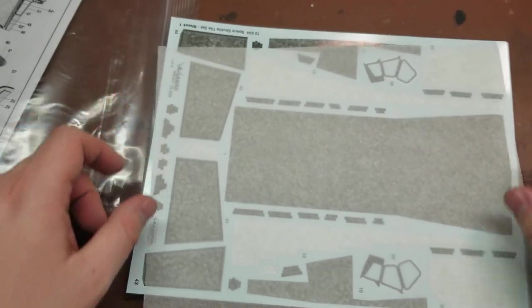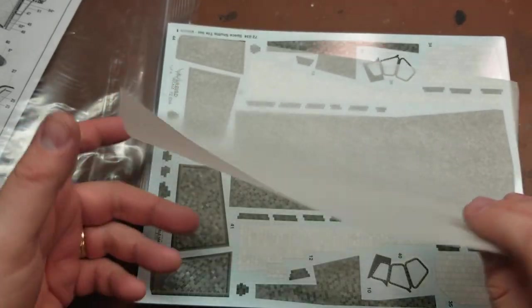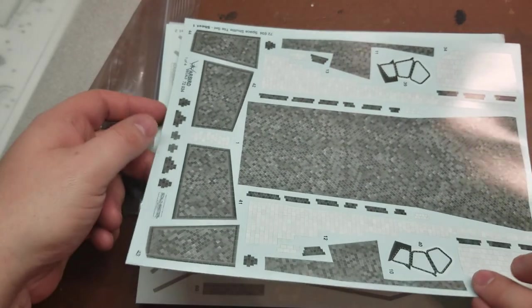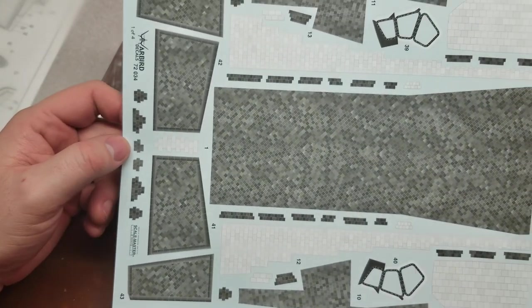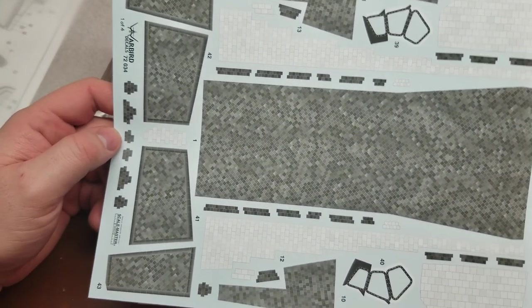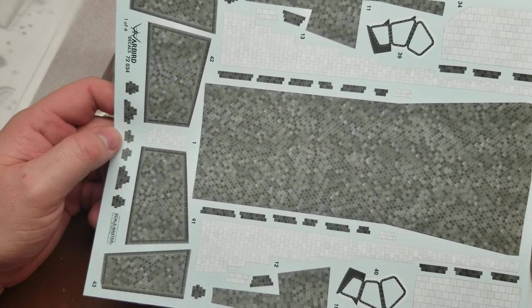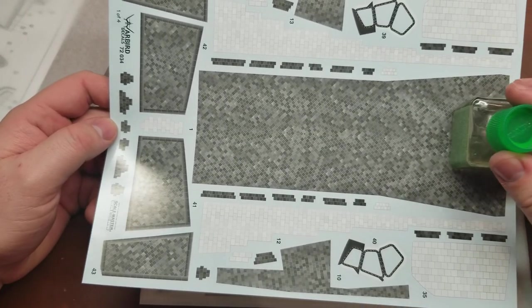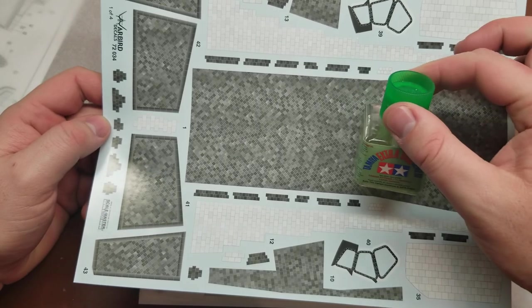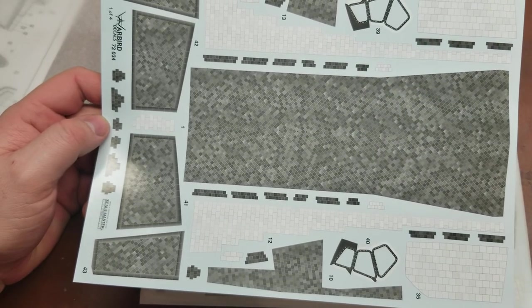If you have not seen a 72nd scale Space Shuttle, they are massive. Let me make sure it is sealed very tightly, but a standard Tamiya extra thin bottle just to give you a sense of scale real quick.